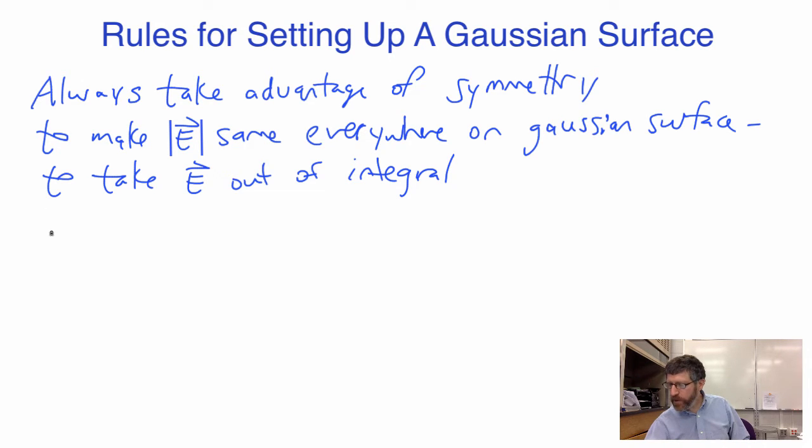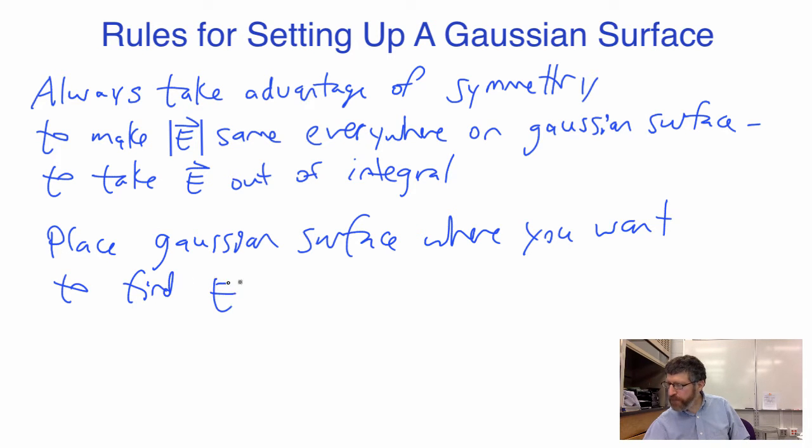Just to understand what we're doing here, you place the Gaussian surface exactly where you want to find the E field. And again, the Gaussian surface, there's nothing there. You just place a geometric construction there, just an idea, a sphere or a cylinder, sometimes a box. You will place it wherever you want to find the field.